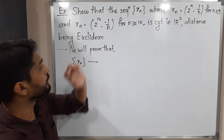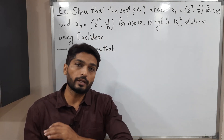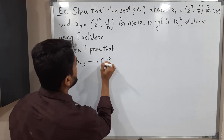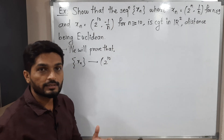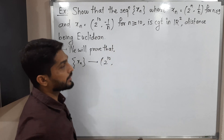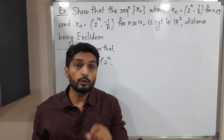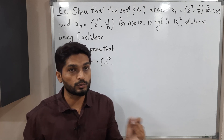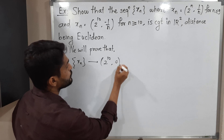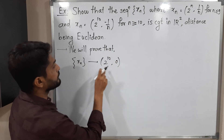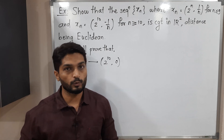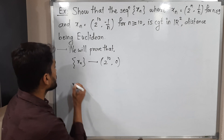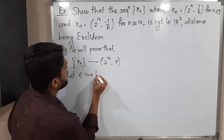Consider the first component 2 raised to 10 — it is a constant, so its limit is 2 raised to 10. For the second component, minus 1/n, applying the limit as n tends to infinity gives 0. So the second component converges to 0. Our target is now to prove that the sequence xn converges to the point (2^10, 0). We will prove this using the epsilon definition, so let epsilon greater than 0 be given.